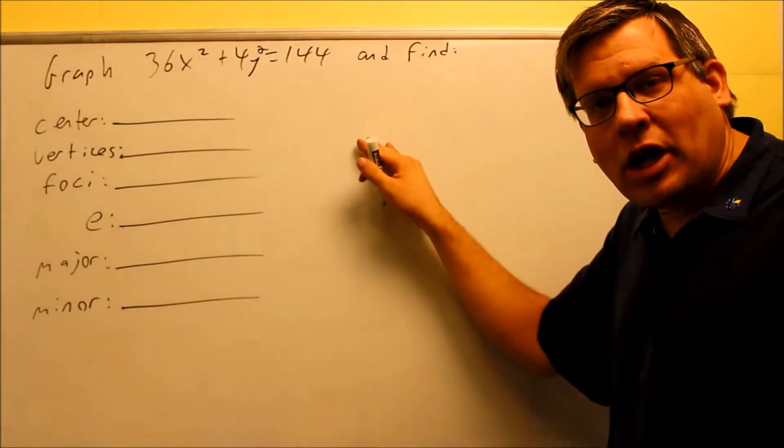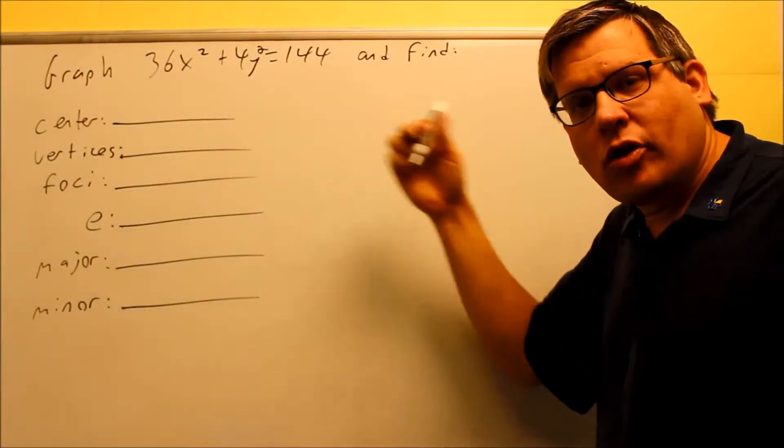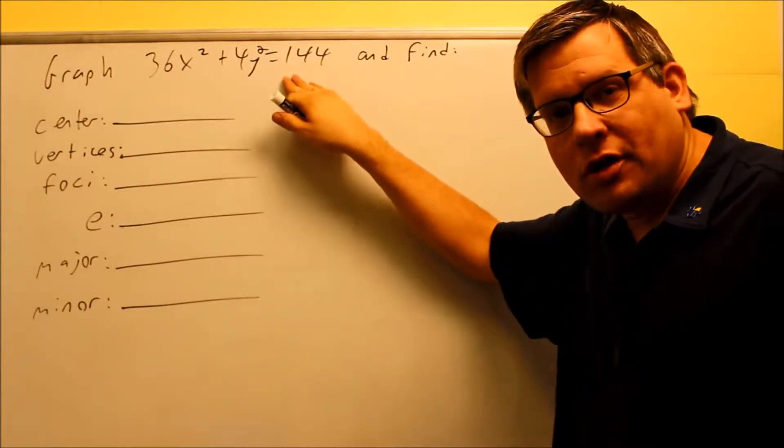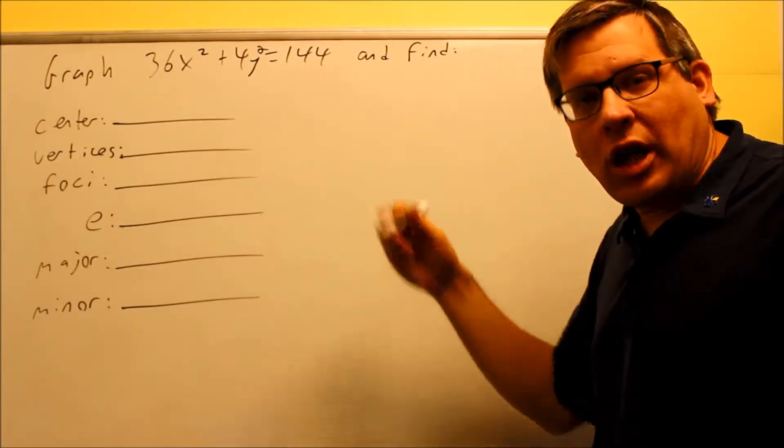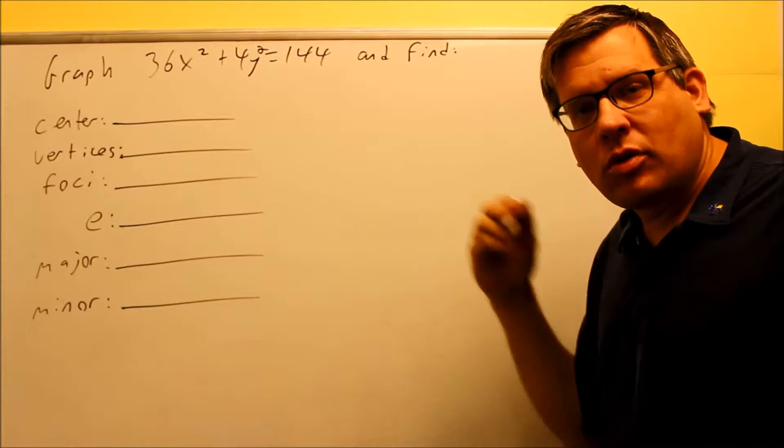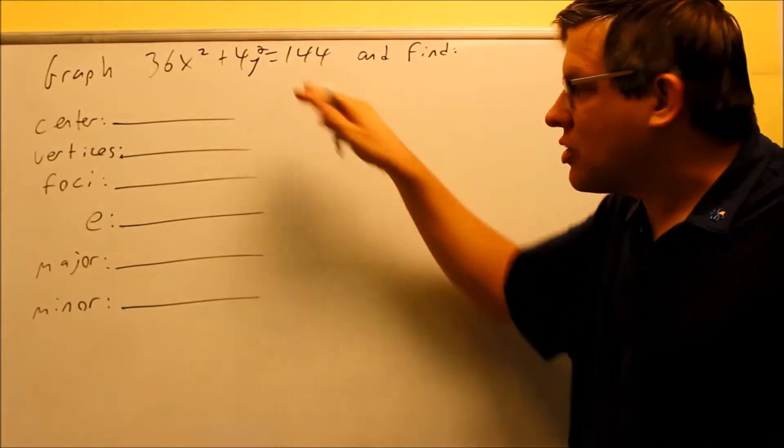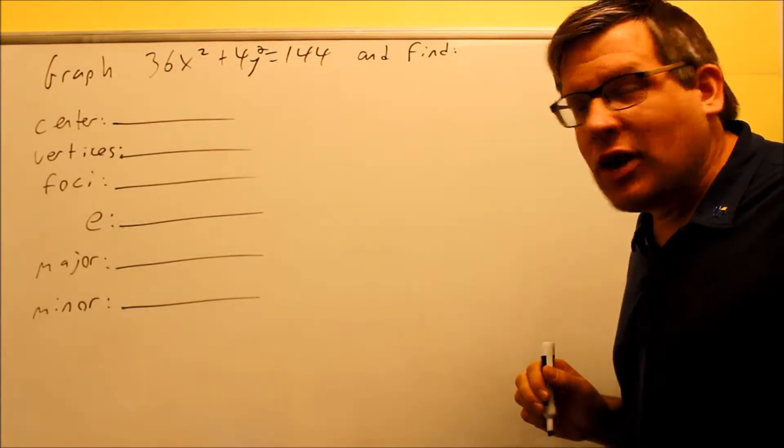Okay, for this example, it's not written in the proper form because according to our notes, we always have to have a 1 after the equal sign, and you also want to have a fraction so that way you can tell what the a and b values are. So in this case, we have to do some dividing on this.